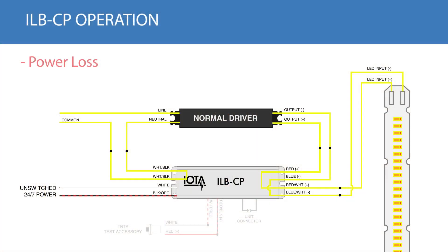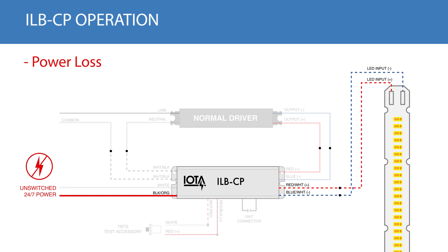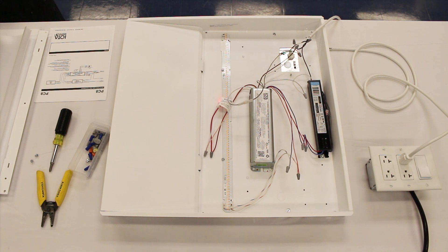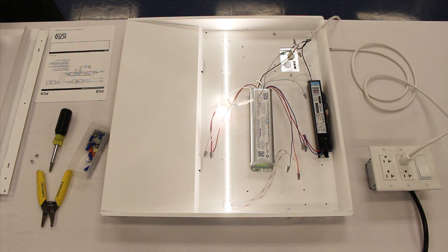During a power loss, the ILB-CP will detect the loss in power through its black-orange normal power sense, and switch to powering the LED module from its internal battery, ignoring any control devices that interface with the normal LED driver. This ensures that your LED lights are illuminated during a power loss situation regardless of wall switch position.